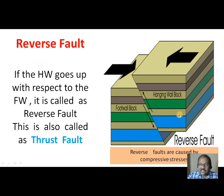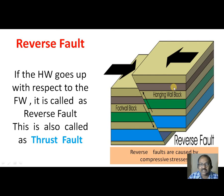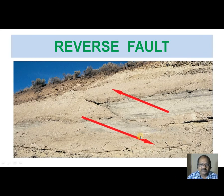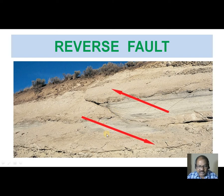Reverse fault: if the hanging wall goes up with respect to the footwall, then it is called a reverse fault. The compressional forces are acting here. This is also called a thrust fault. So reverse faults or thrust faults are caused by compressive stresses. This is the geological formation, this is the fault plane, this is the footwall, and this is the hanging wall — with respect to the footwall, the hanging wall goes up, hence it is called a reverse fault. This can be seen very clearly in the field photograph.